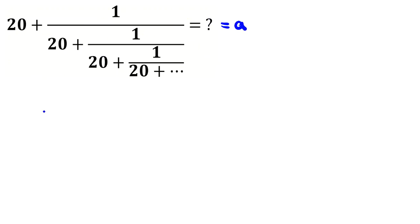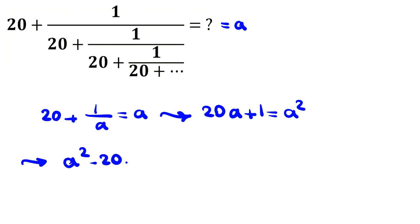So we can say 20 plus 1 over a is equal to a. If we multiply both sides by a, we get 20a plus 1 equals a squared. Then you can say a squared minus 20a minus 1 is 0.